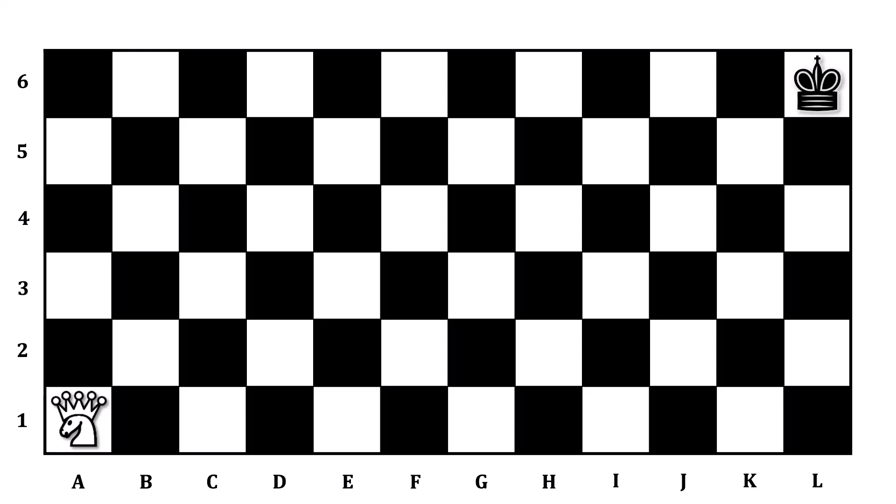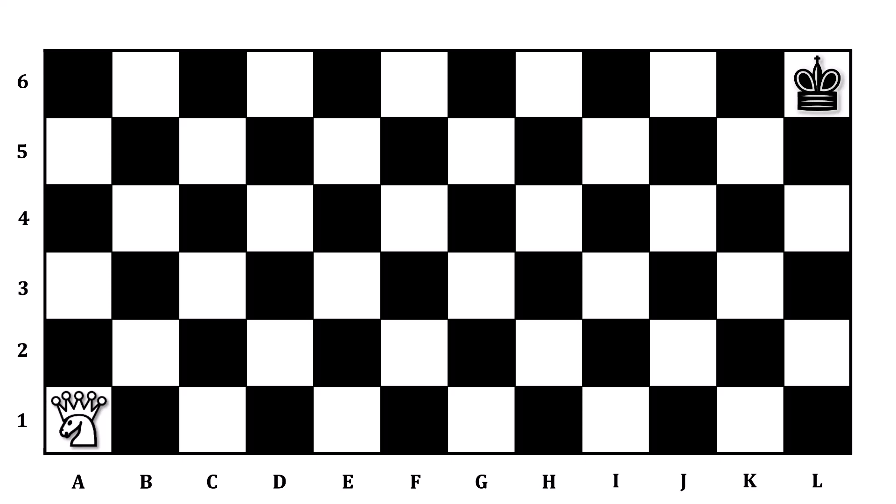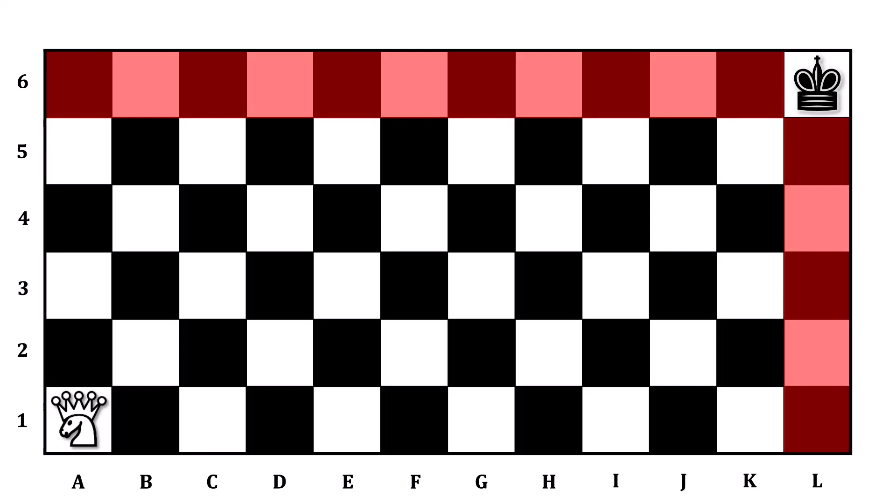For example, let's think about the squares where if you were to land on them, your opponent would immediately be able to capture the King. For starters, all of Row 6 and Column L fall into that category. The Amazon can move like a Queen, and so if we are anywhere in Row 6, the opponent can go directly to the King's square and capture the King.